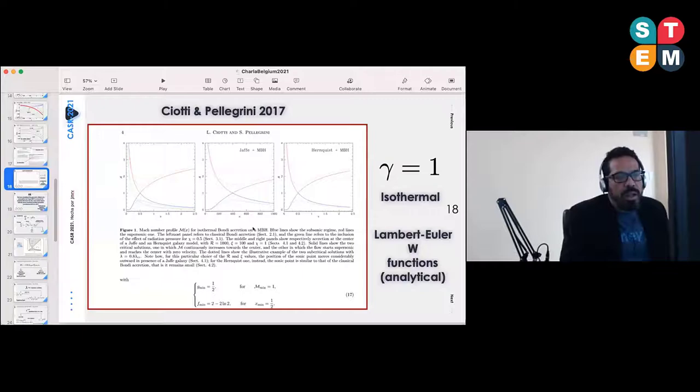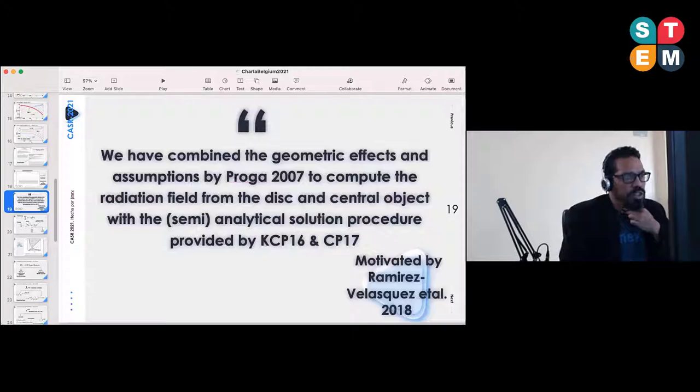Applying to several galactic models, the advantage of using gamma equal to one in this case was that they were able to use Lambert-Euler W functions and solving analytically. This is the only case you can actually have an analytical solution. When gamma is different from one, you have to use numerical methods in order to solve them.